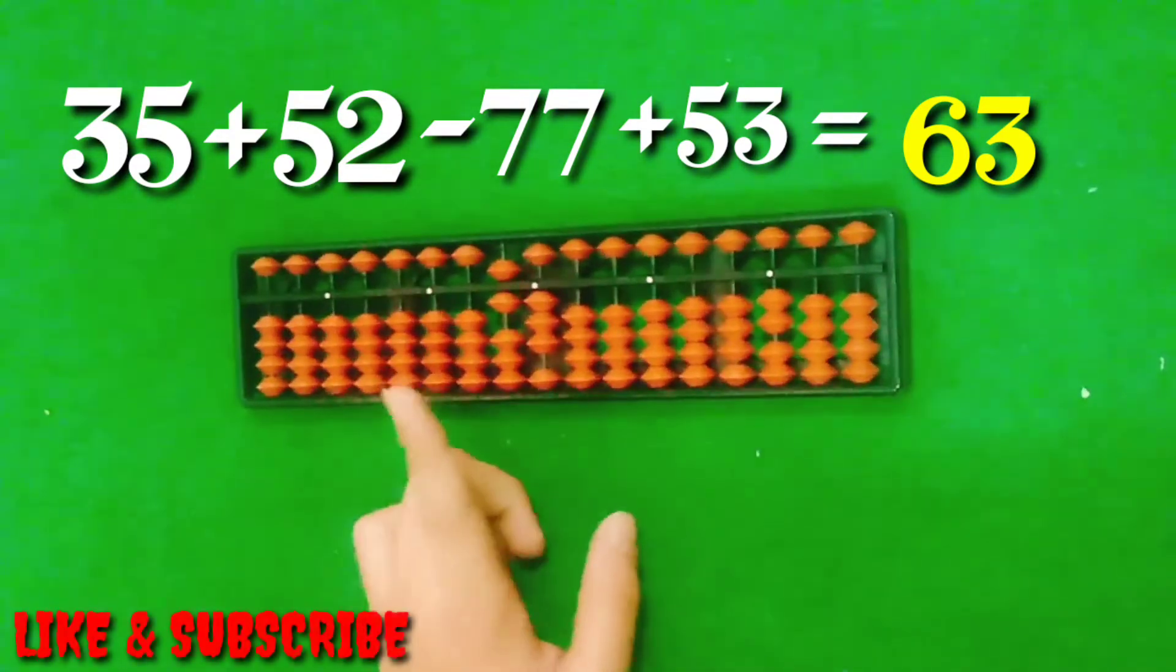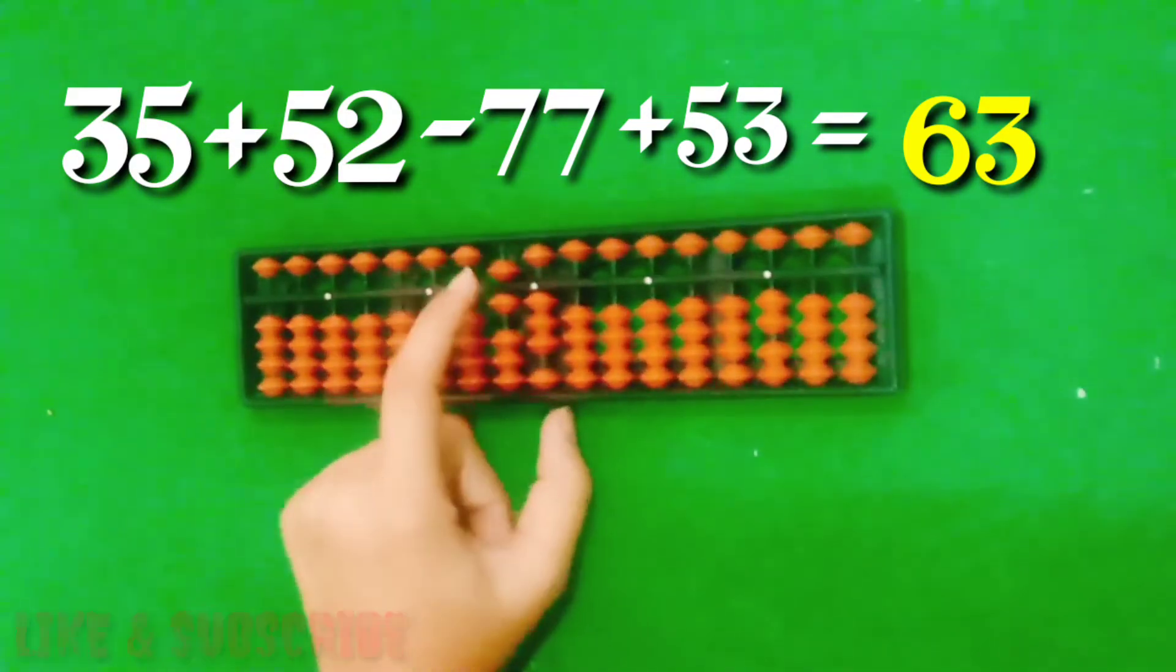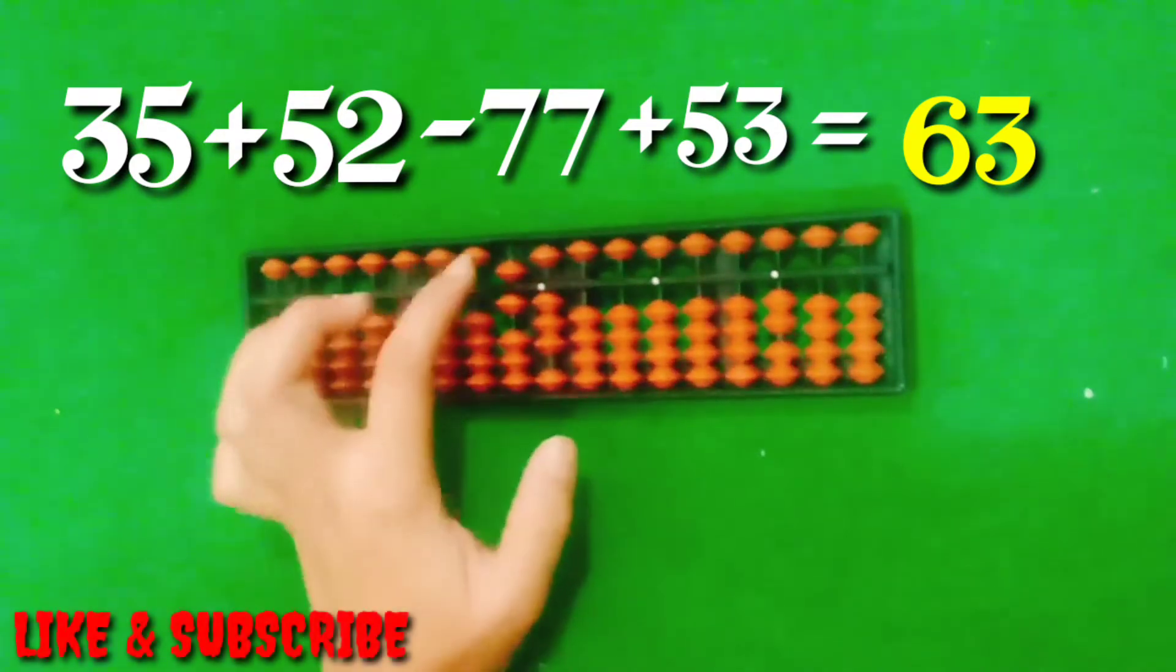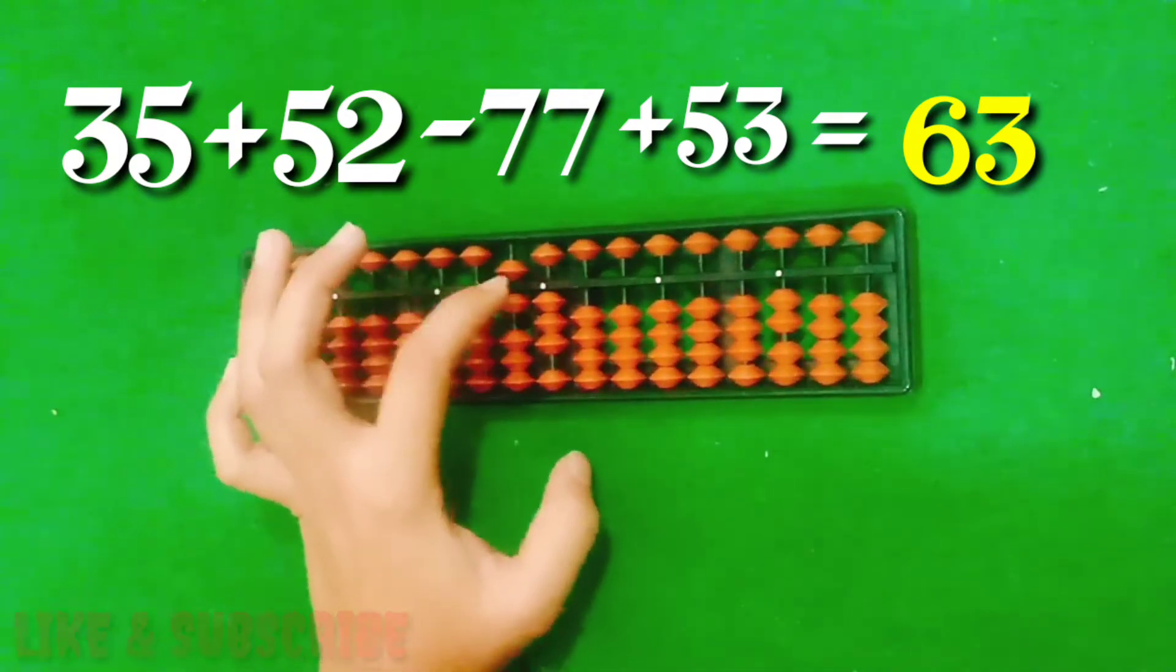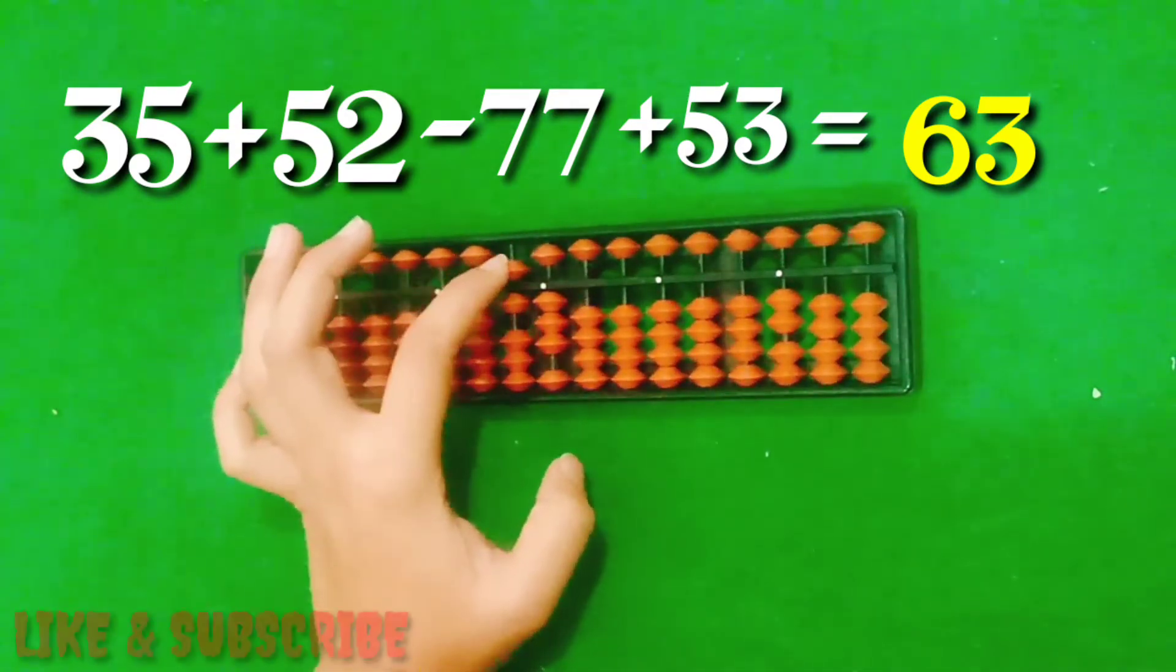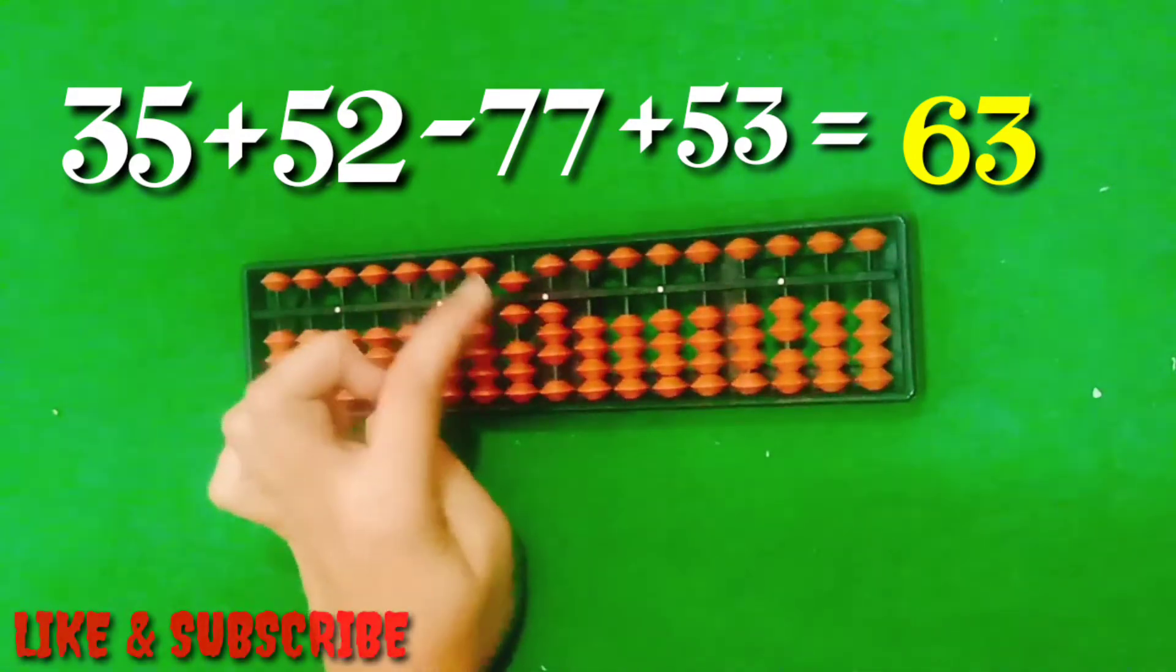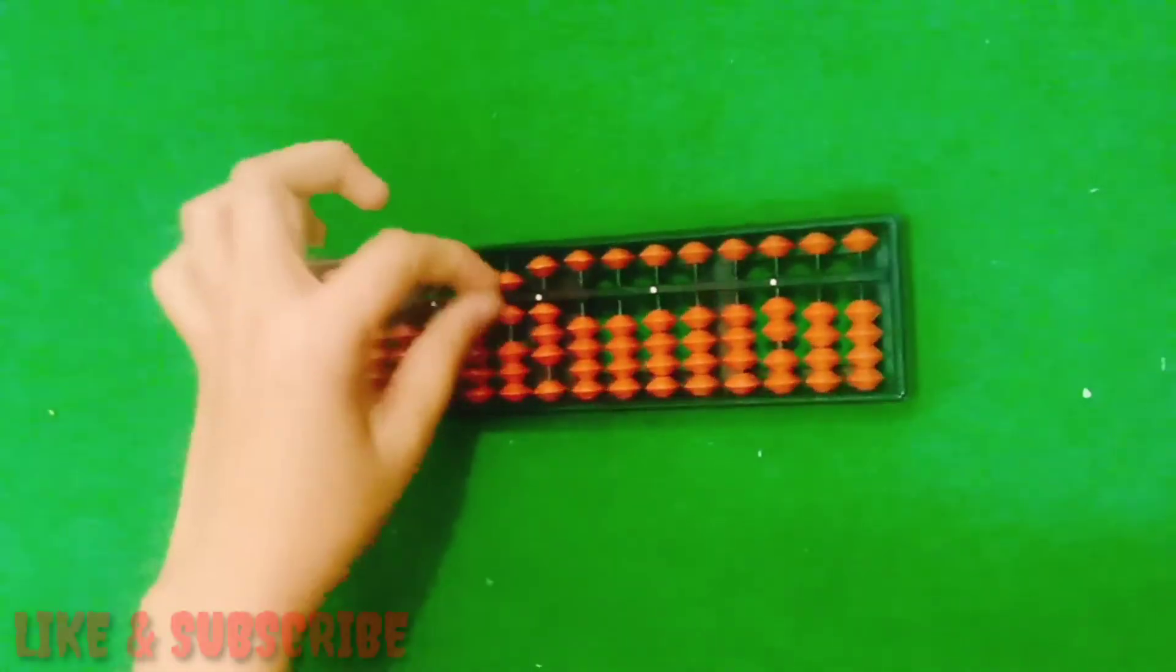If you think how it makes 63, then see: this is 50, this is 10, 50 and 10 is 60. Because I told you that all the upper digits value is 5 and all the lower digits value is 1. So this is the ones place and this is the tens place. This is 10, 10, 10, 10, so this is the upper bit, so its value is 5. And this is the tens place, so it's called 50. 50, 10, 60, and 1, 2, 3, 63.